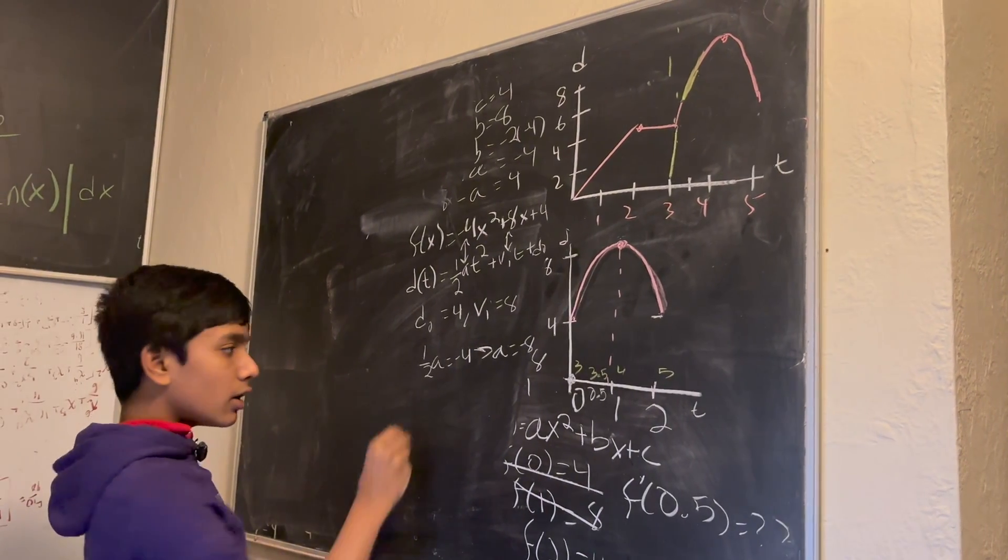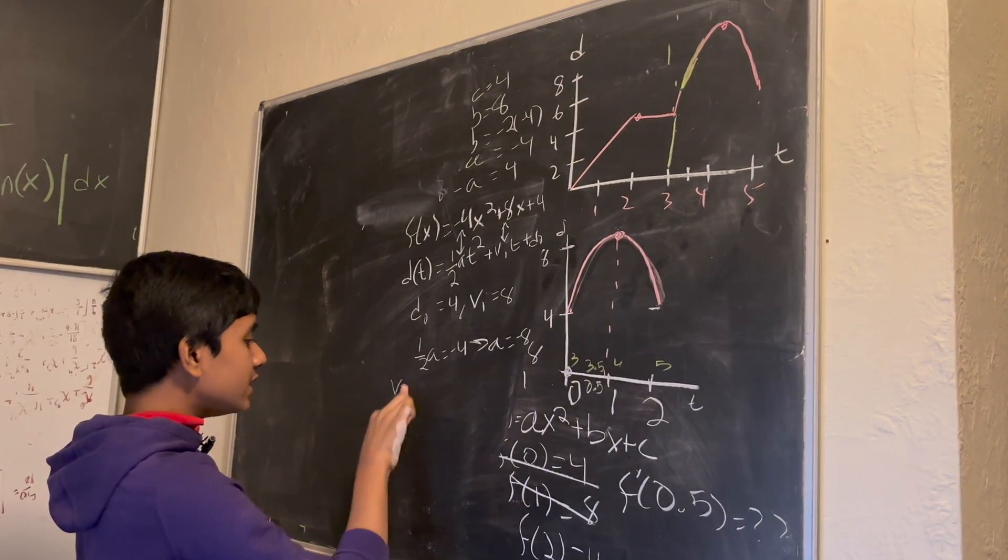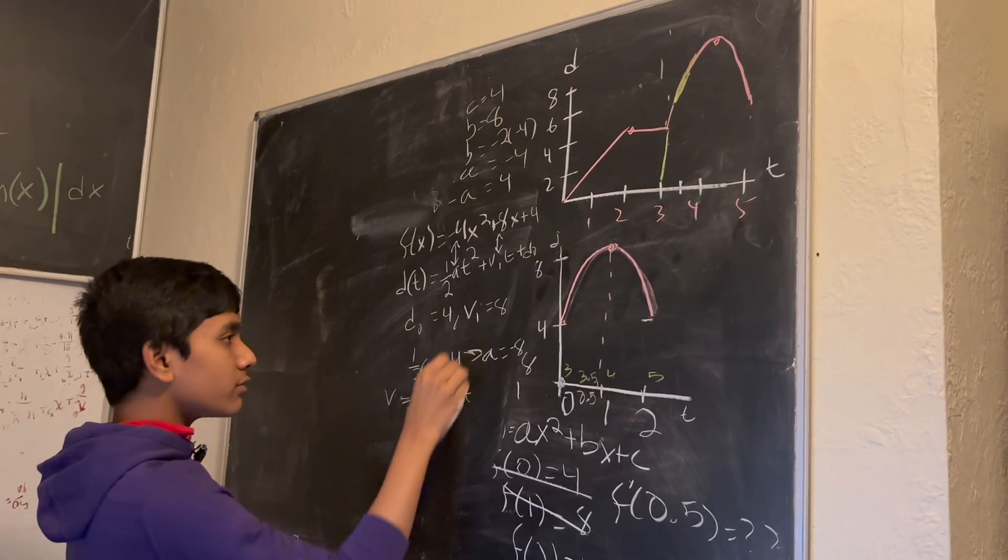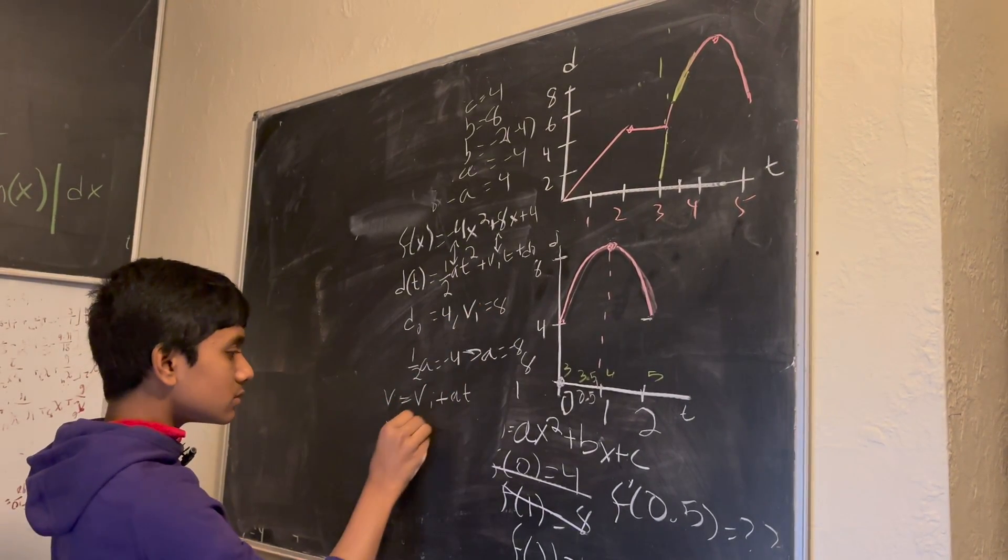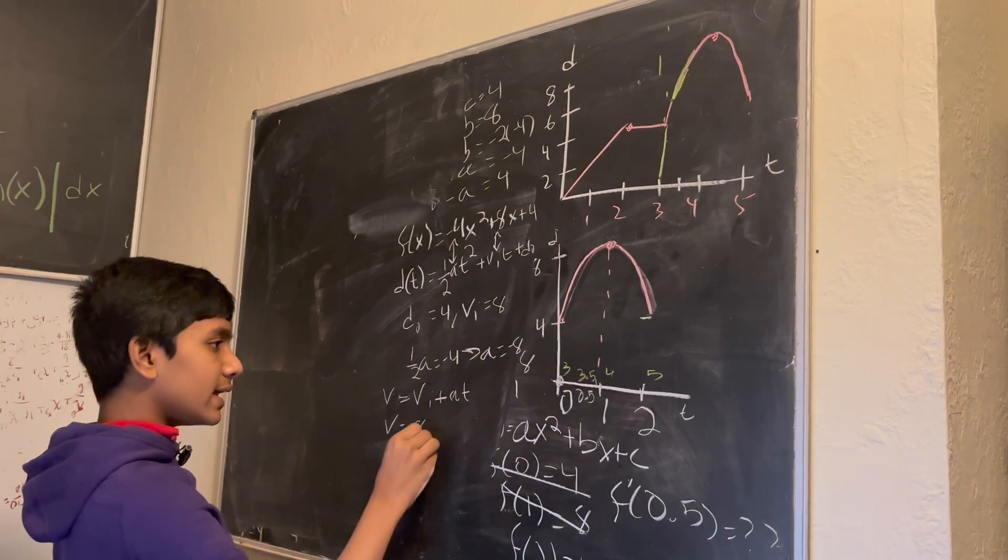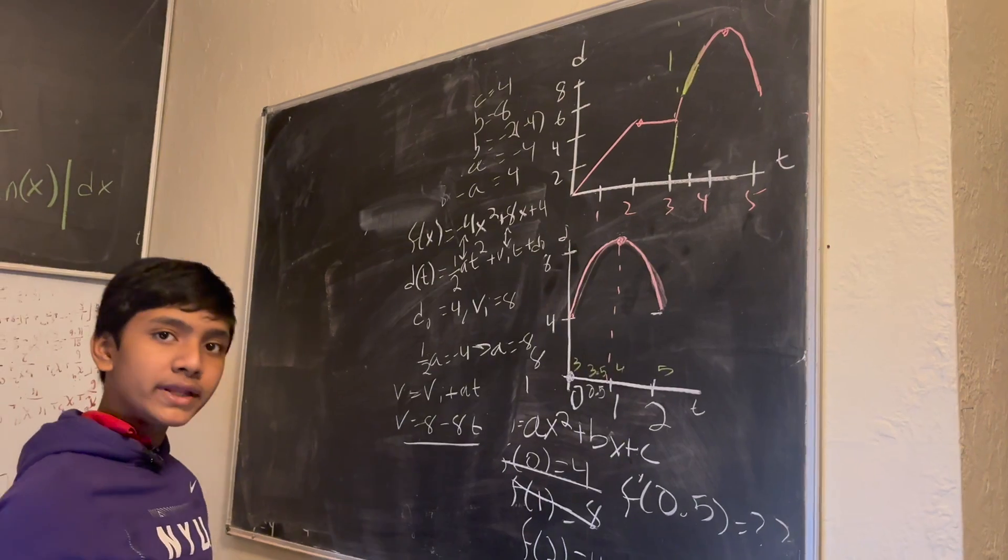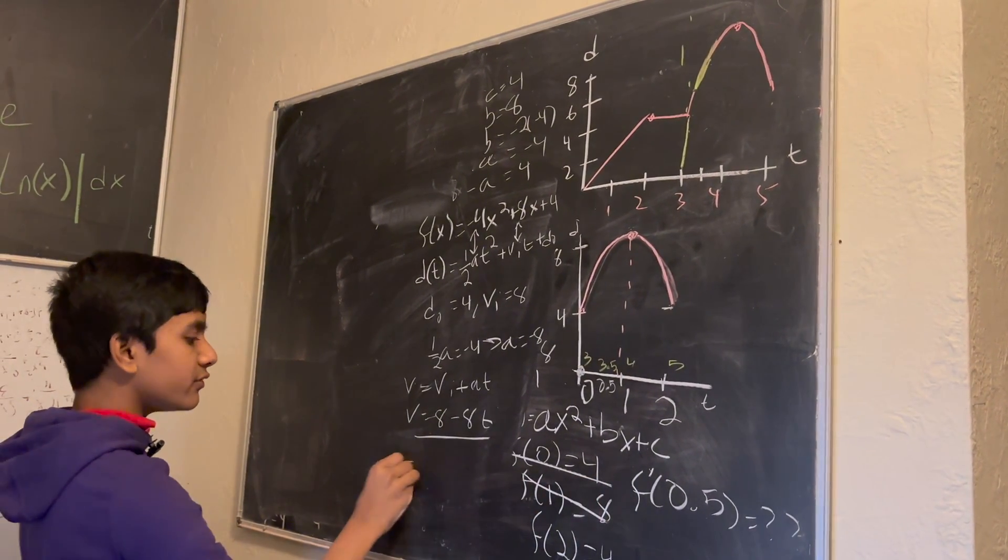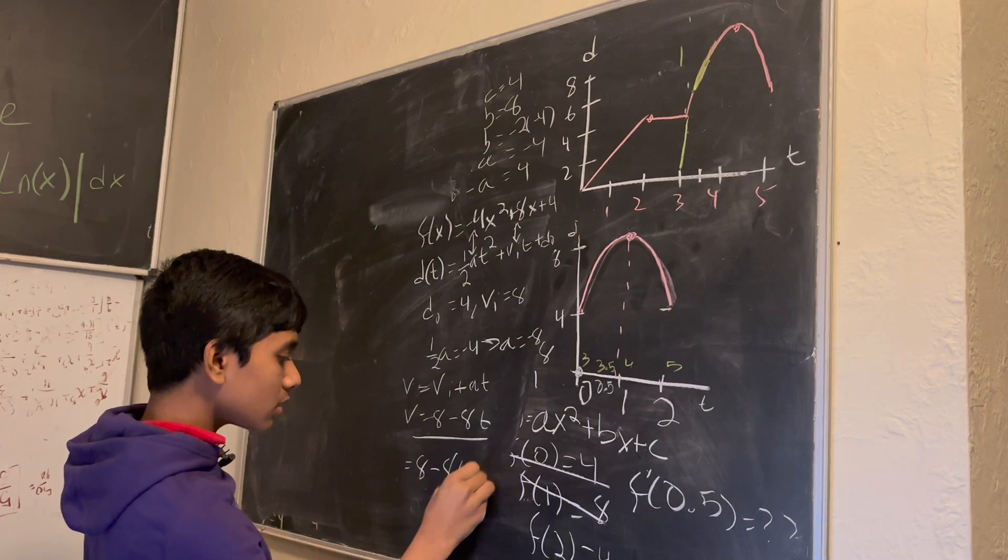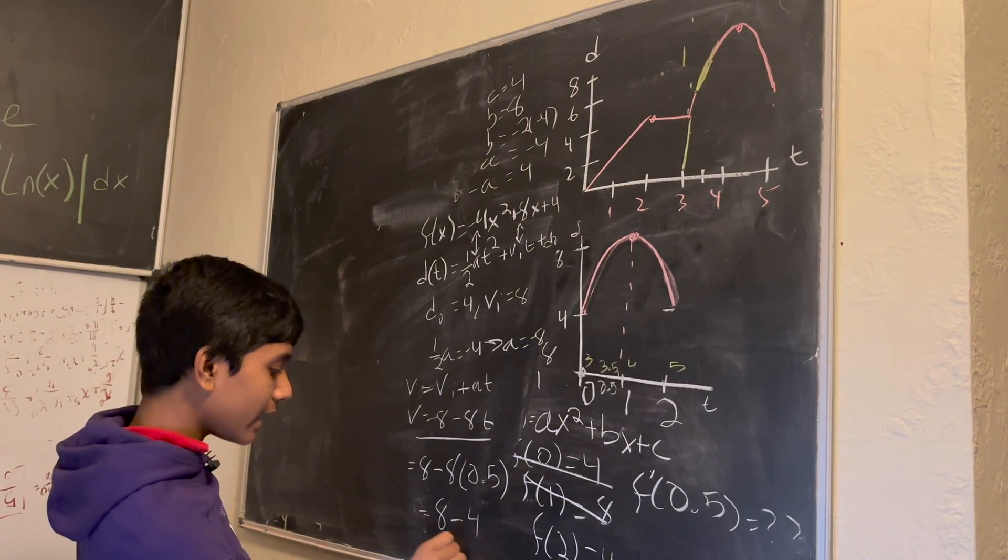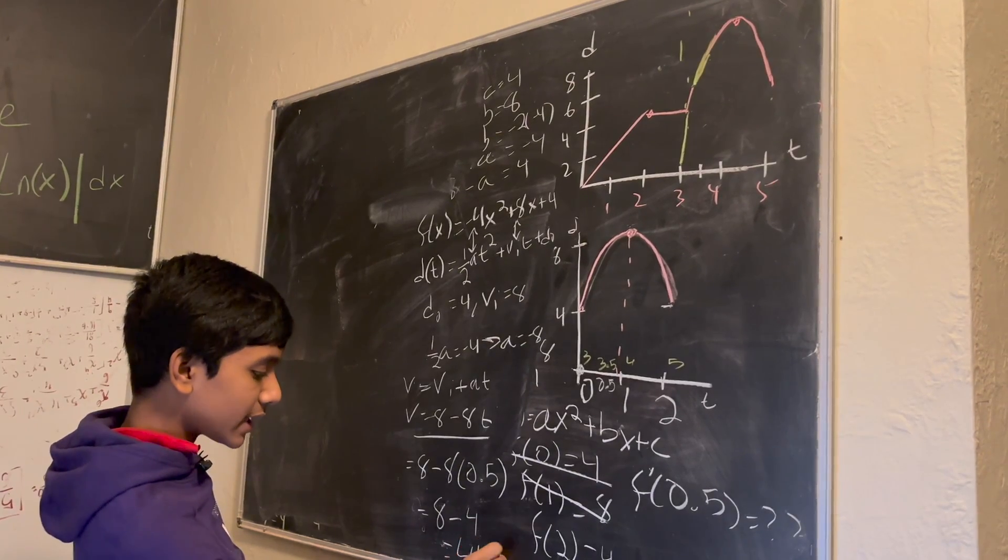And we also know that v in general is equal to v_i plus a t. So we write, since v_i is 8 and a is negative 8, we have this. And now all we need to do is plug in t equals 0.5. And would you look at that, we've got 4 meters per second.